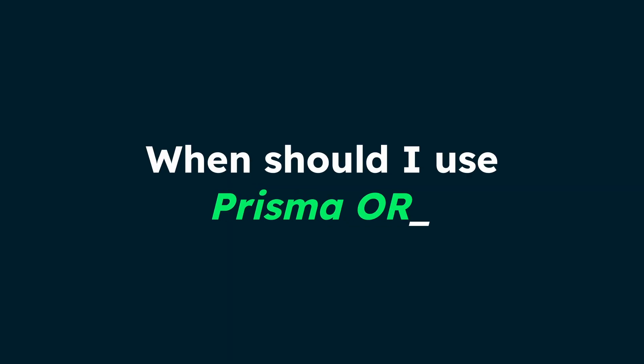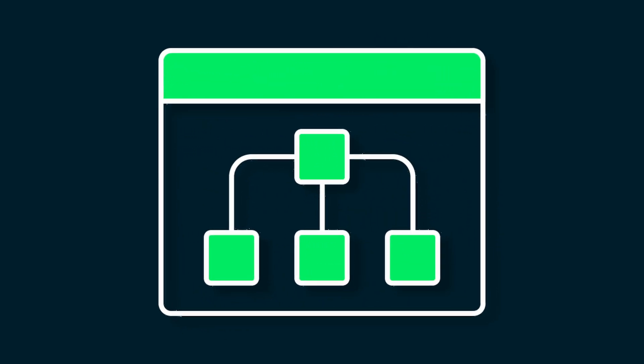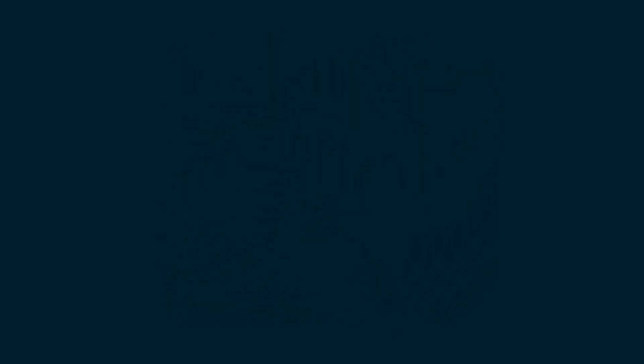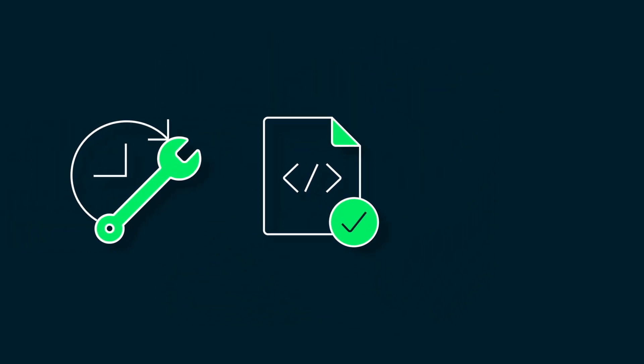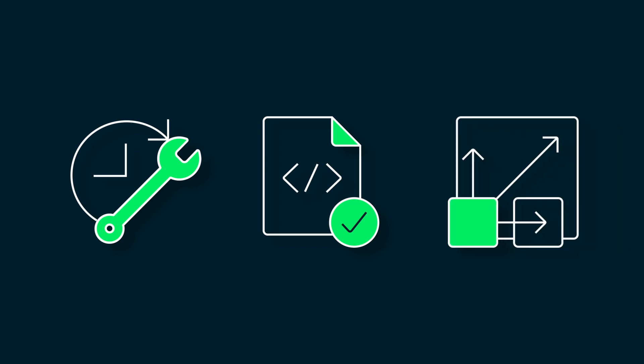When should you use this combination? The Prisma ORM and MongoDB combination works well when you need both schema flexibility and type safety, your team prefers clear data modeling and documentation, you want to reduce boilerplate code, you're building with TypeScript, or performance and scalability matter for your application.